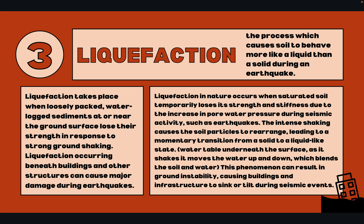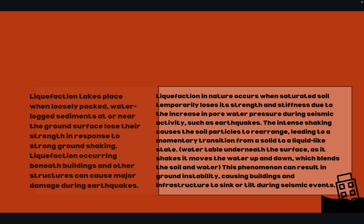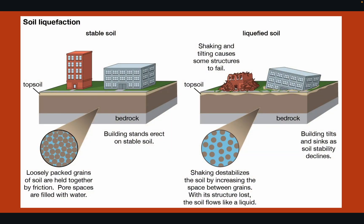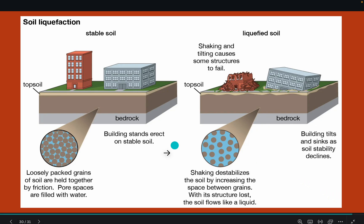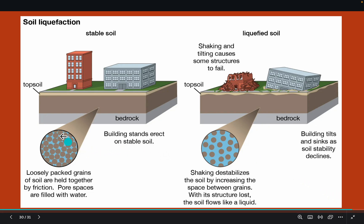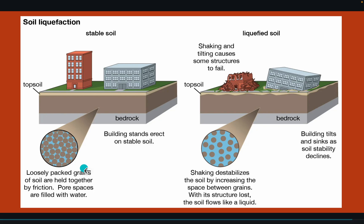The phenomenon can result in ground instability, causing buildings and infrastructure to sink or tilt during seismic events. You can see this picture which depicts it very well: we have stable soil with packed particles, and when there's a lot of water introduced, it destabilizes the soil by increasing the space between the grains.